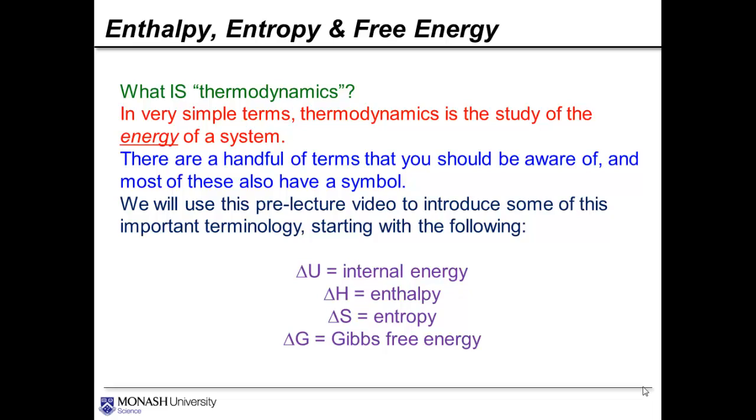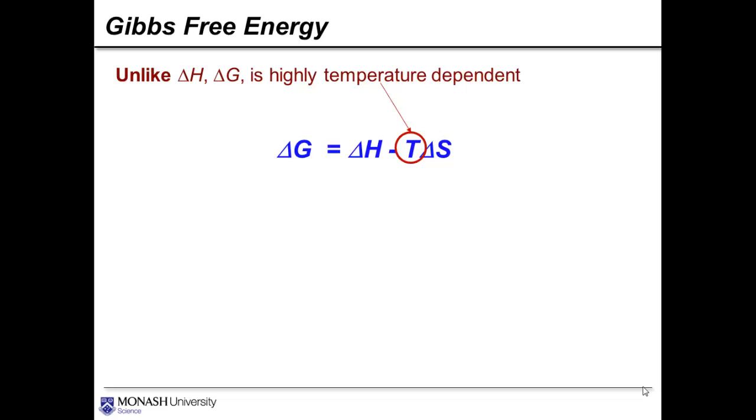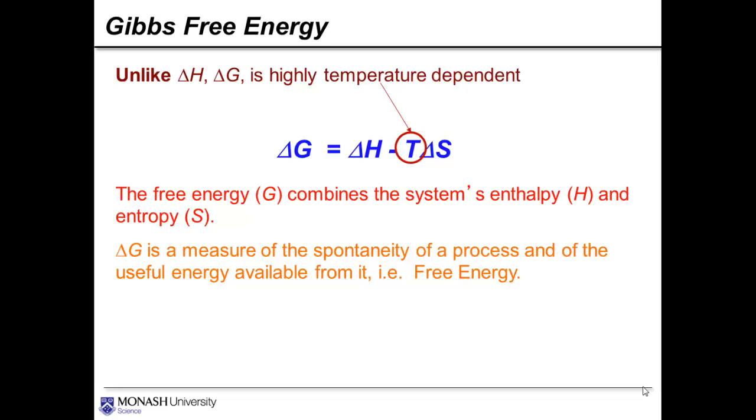But enthalpy and entropy are inherently linked to one another by something called the Gibbs free energy. Unlike delta H, delta G is highly temperature dependent. And using the equation you can see here, the change in the Gibbs free energy is related to both the enthalpy and the entropy, and there's a temperature term in that equation as well. The free energy combines these two things to give a measure of the spontaneity of the process and of the useful energy available from it. The one thing that you should remember is for a reaction to be spontaneous, delta G should be less than zero.